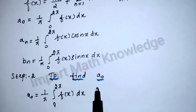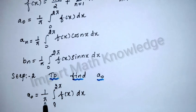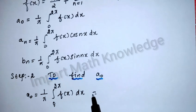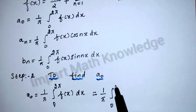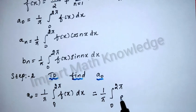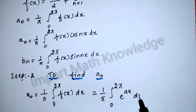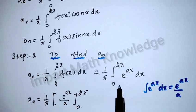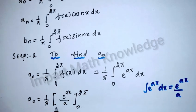Step 2: find a0. a0 = (1/π) integral from 0 to 2π of f(x) dx. Since f(x) = e^(ax), this becomes (1/π) integral from 0 to 2π of e^(ax) dx. The integral of e^(ax) is e^(ax)/a. Integrating, we get (1/π) [e^(ax)/a] from 0 to 2π.